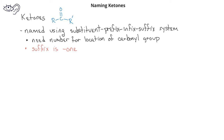As with other functional groups that needed a number to locate the functional group, we will give the carbonyl carbon the lowest possible number in the carbon chain. The exception to needing a number for the carbonyl carbon is if the carbonyl group is part of a ring structure. By definition, the carbonyl carbon in the ring will always be the first carbon in the ring.